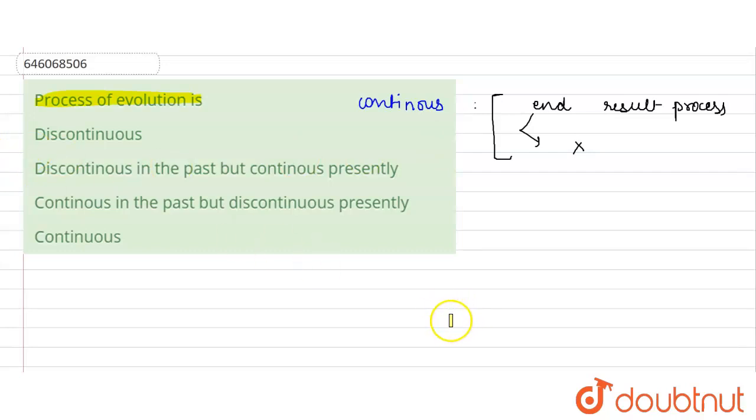So the correct answer here is it is a continuous process. It is not a discontinuous process. Why? Because if it would have been a discontinuous process, then the process would have been stopped somewhere. It is not happening.